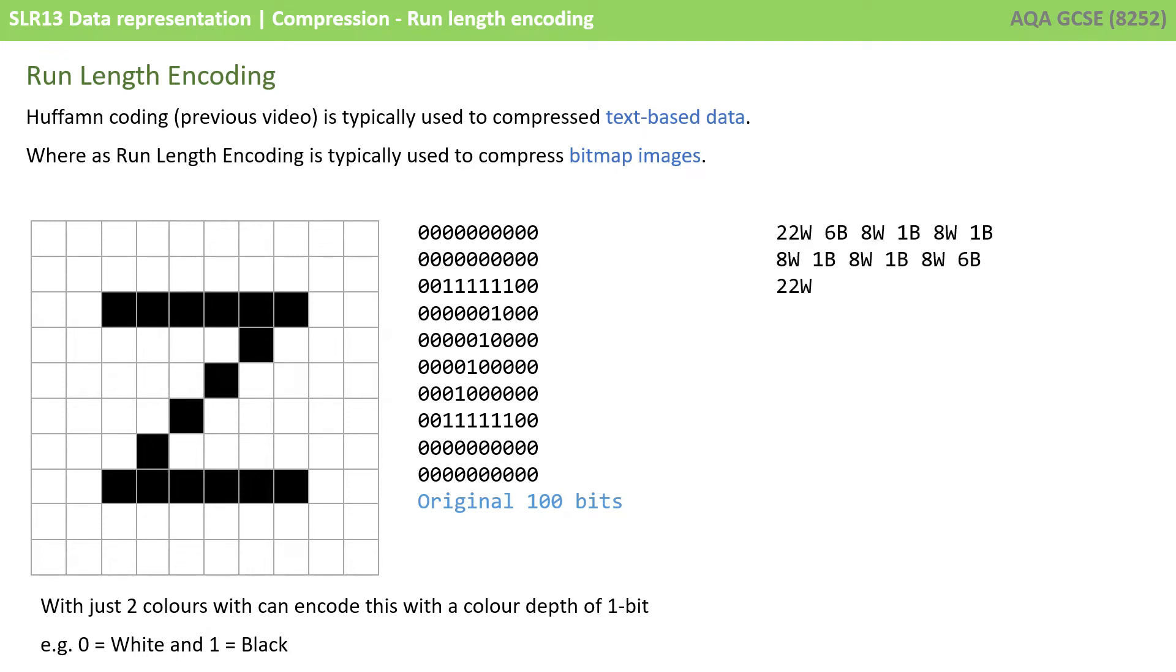But you will have noticed there are lots of contiguous sections of white pixels and black pixels. What I actually have here is 22 white pixels, followed by 6 black pixels, followed by 8 white pixels, followed by 1 black pixel, and so on and so forth.